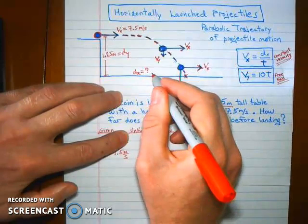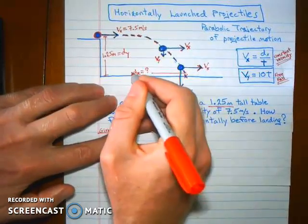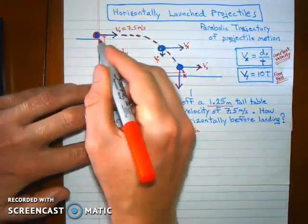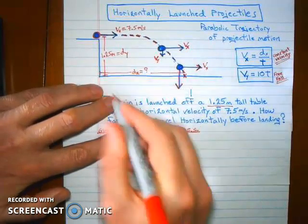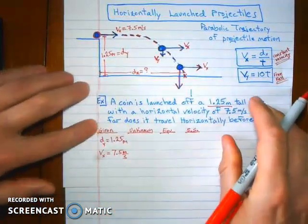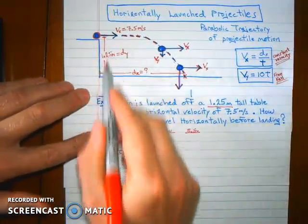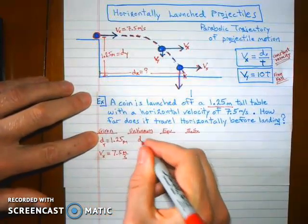We don't really know that distance, right? We know it's going to launch from the edge of the table and it's going to hit the ground. How far is that in the x direction? It's not the same distance as it travels in the y direction. So that becomes our unknown.